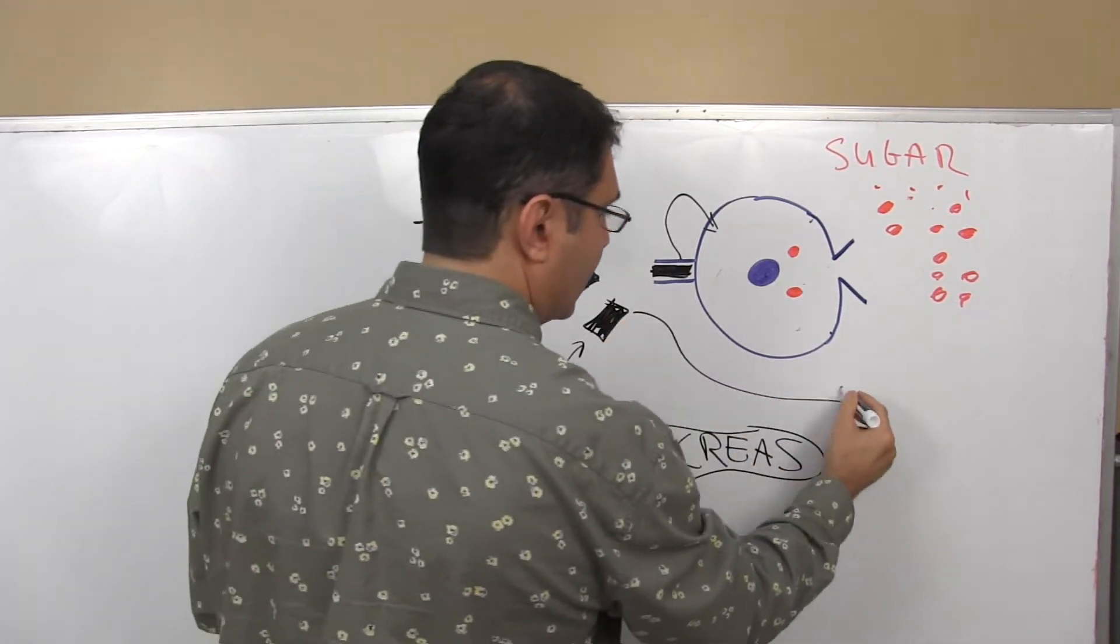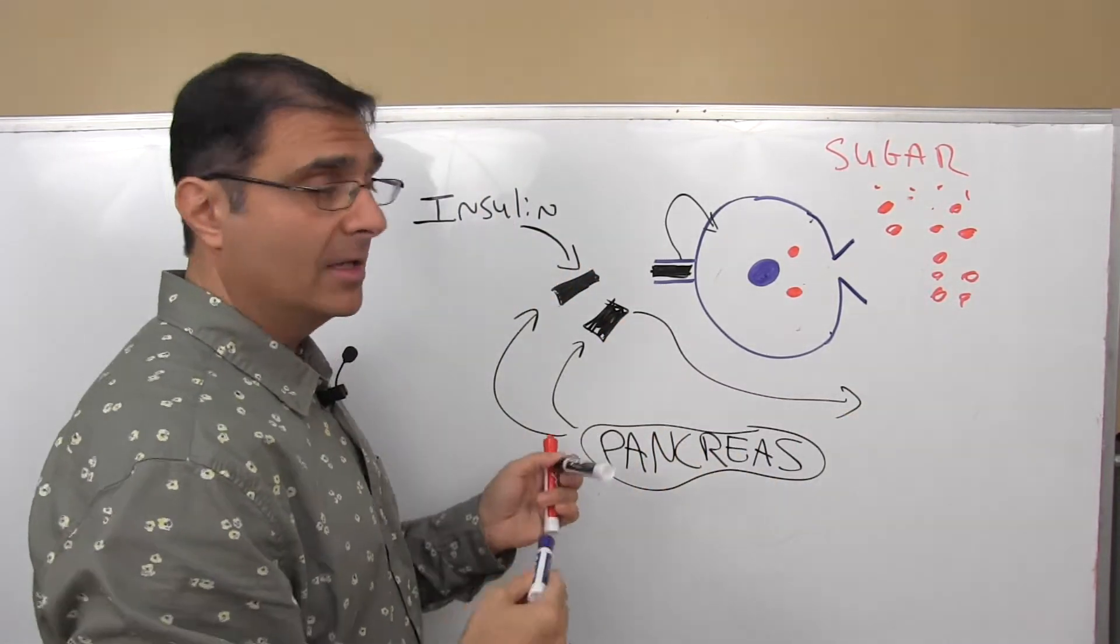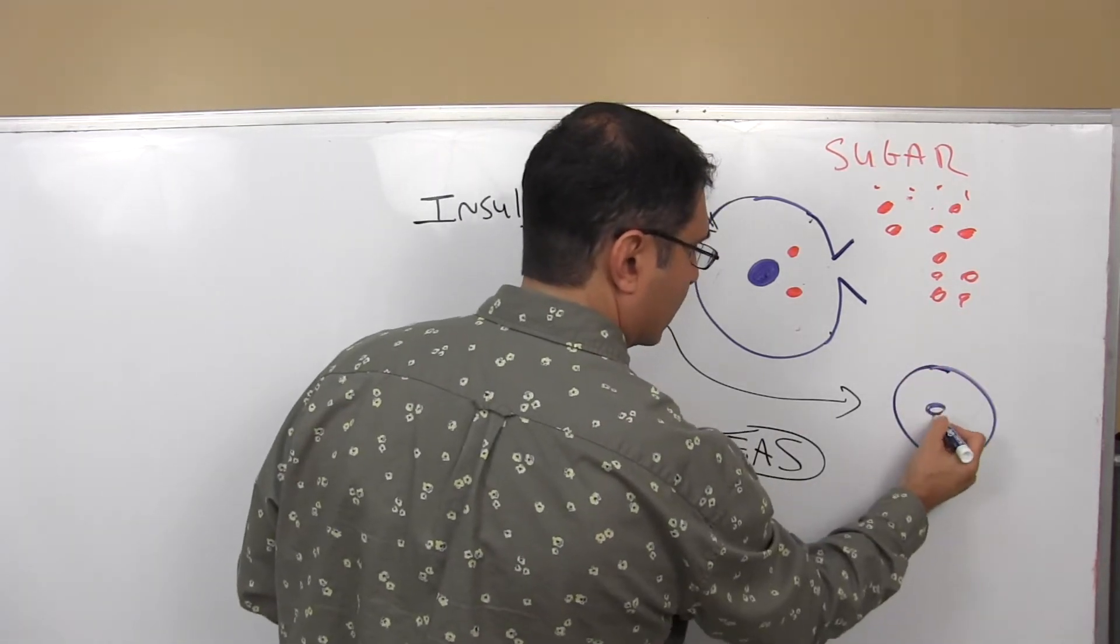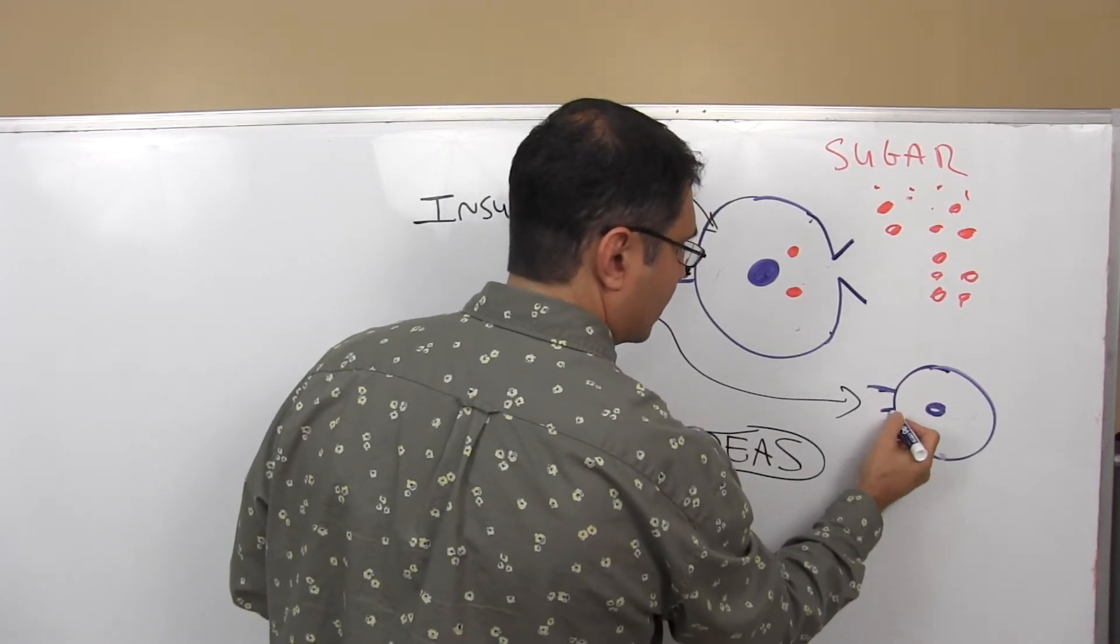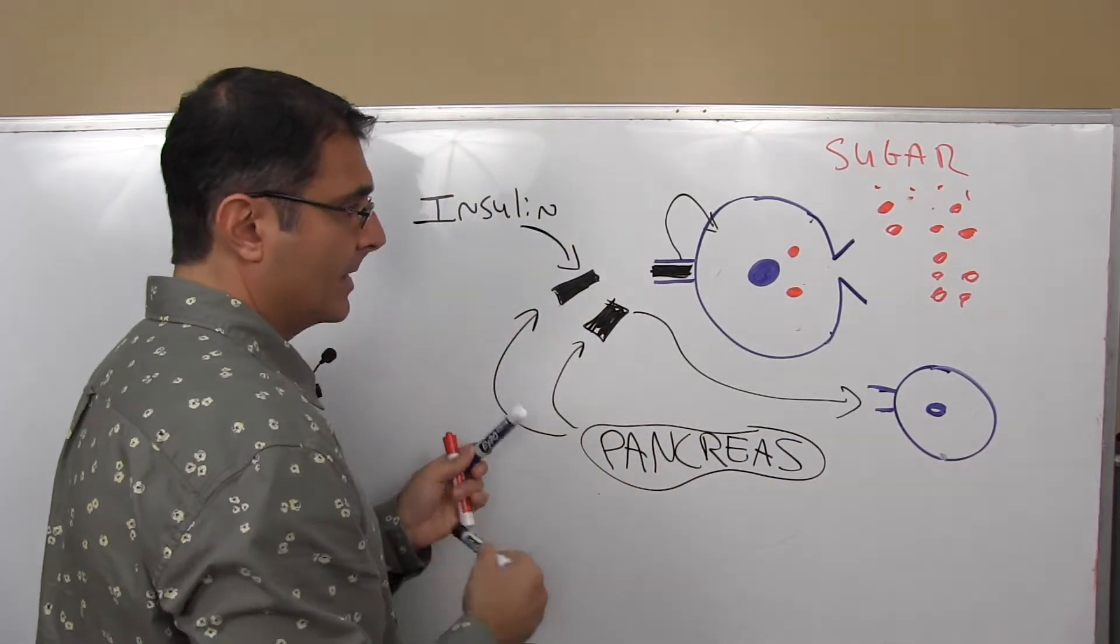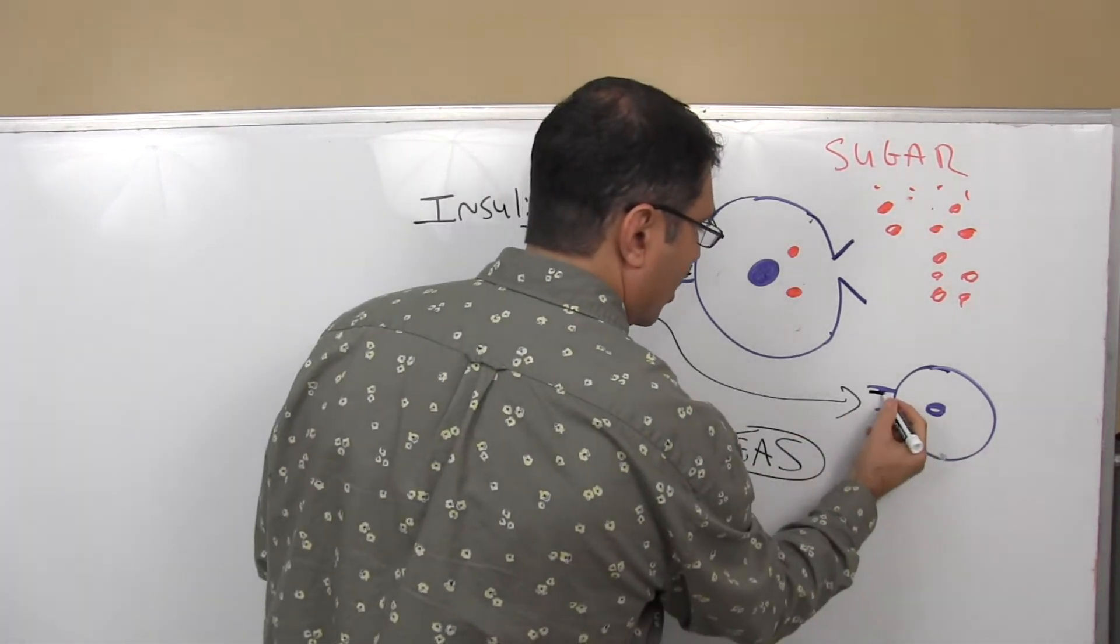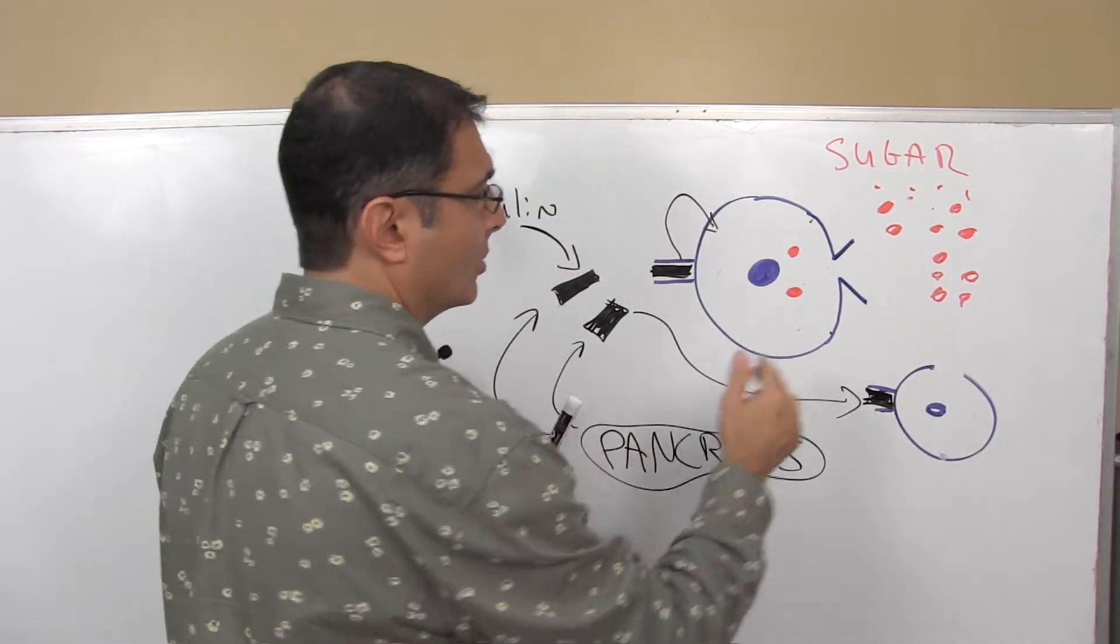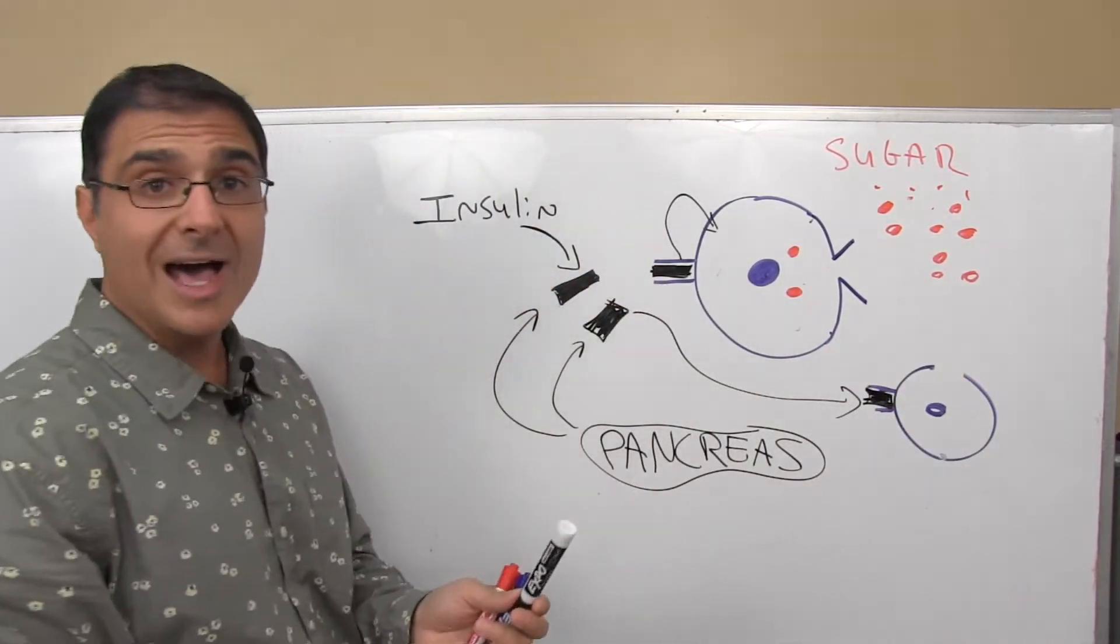That insulin travels through the blood, finds another cell, plugs into another receptor. So it finds another cell, plugs into another receptor. And again, we lower our blood sugar, but just a little bit. So we only lower it a little bit. So the blood sugar is still high.